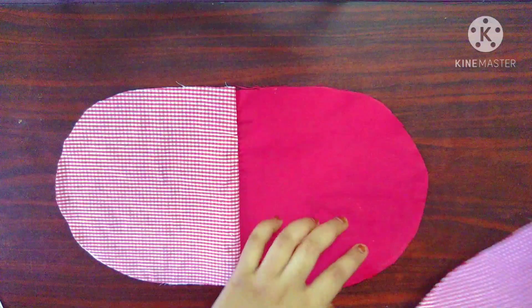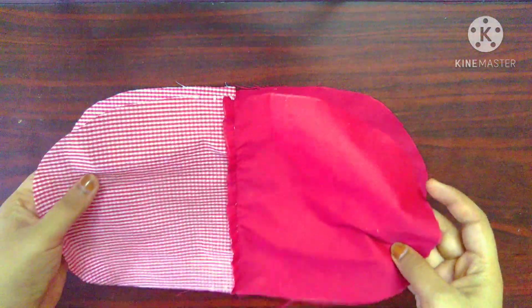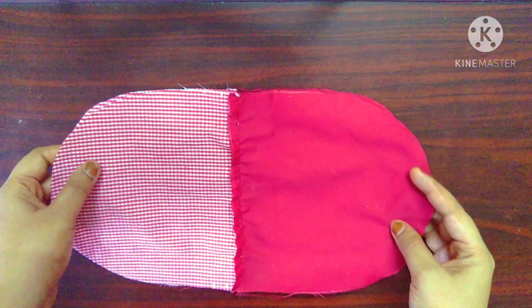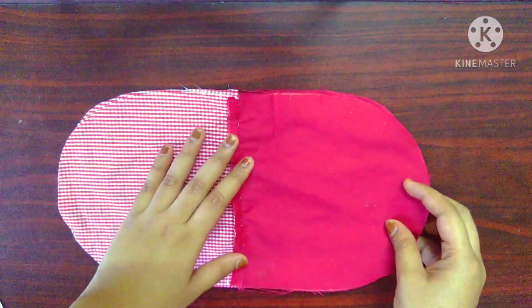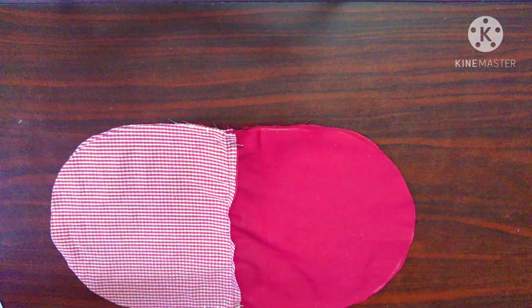Now I am going to place these pieces such that the right sides of the main fabric and the lining fabric are facing each other respectively. I am using pins to keep the fabric in place.